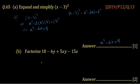And the part b, factorize 18 minus 6y plus 5xy minus 15x. We can rearrange it for our convenience.